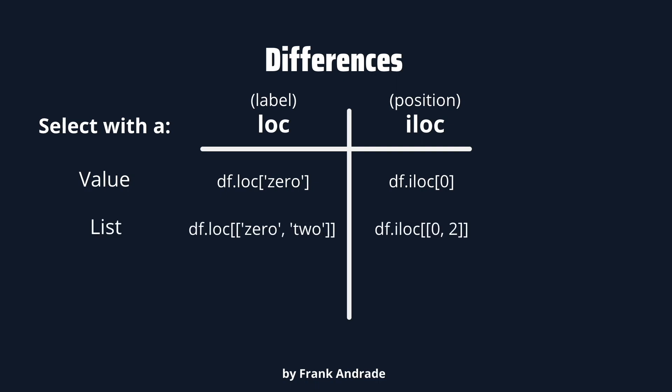To select elements with a list using loc, we write df.loc, open square brackets, and inside we write the list of index labels — for example, zero and two. For the iloc method, we write df.iloc with square brackets and inside write the list of index positions — zero and two as integer numbers.